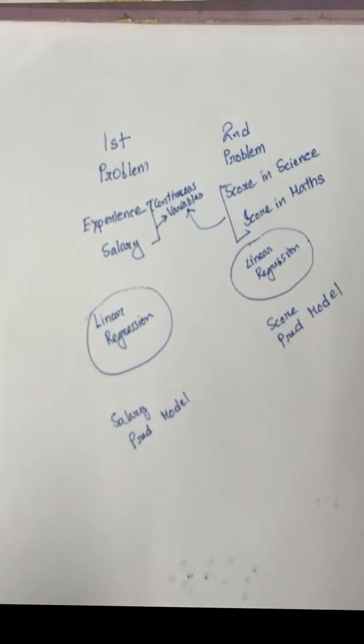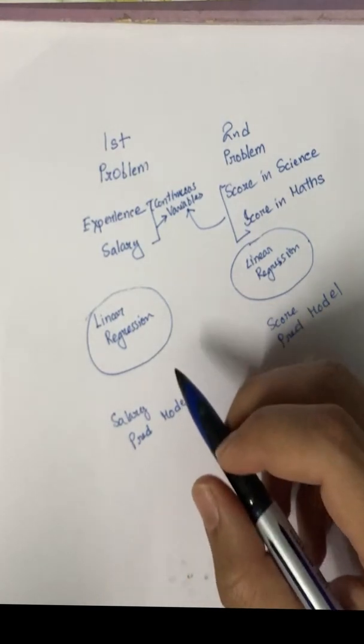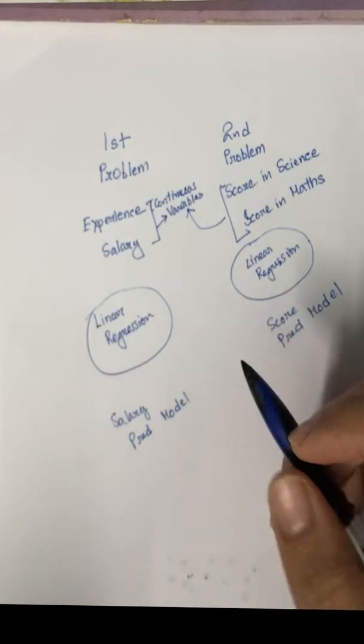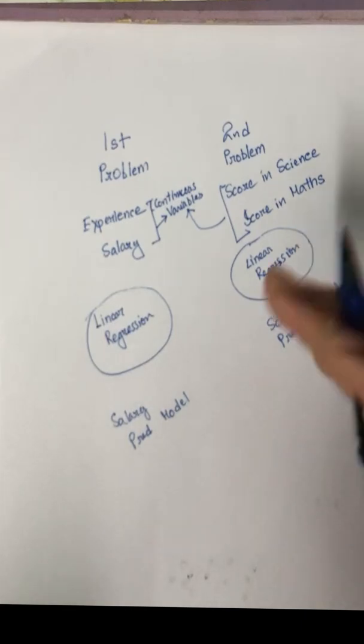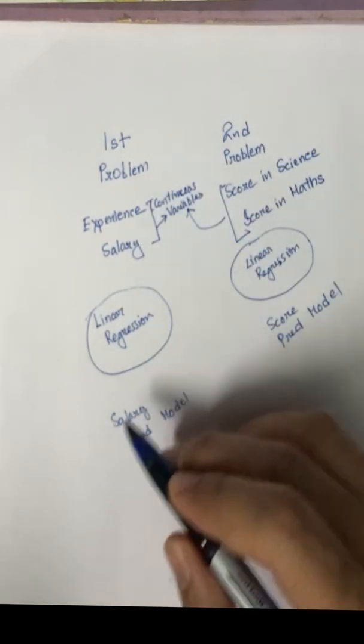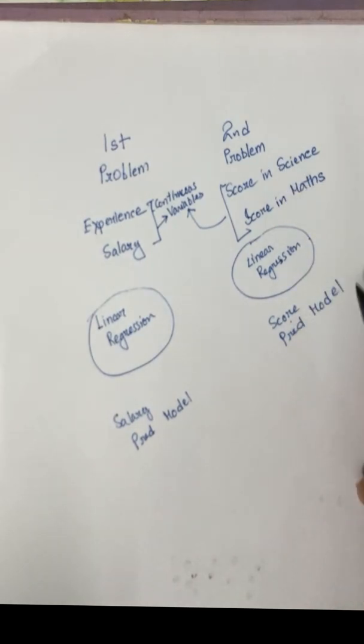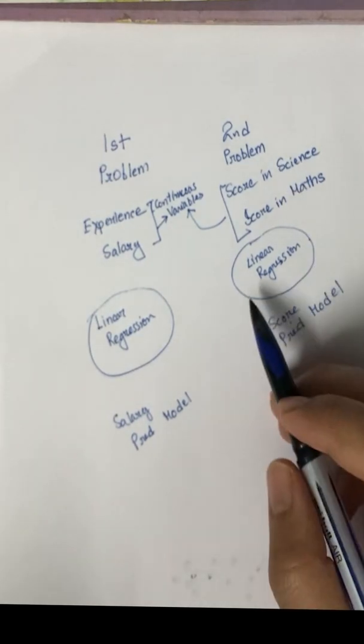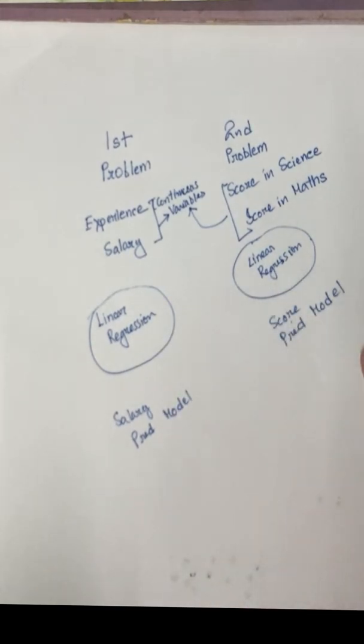And this is a score prediction model. So to understand in a very simple way is that model means an algorithm used in a particular context. Let me repeat again: model is algorithm used in a particular context. So in this context we are predicting salary, so it's a salary prediction model. In this case we are predicting scores, so it's a score prediction model.